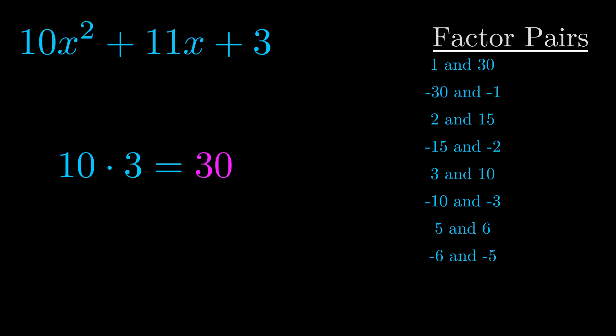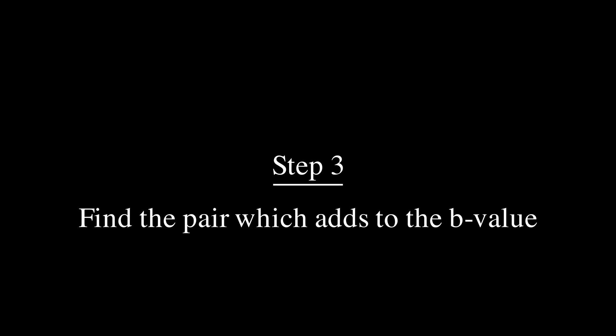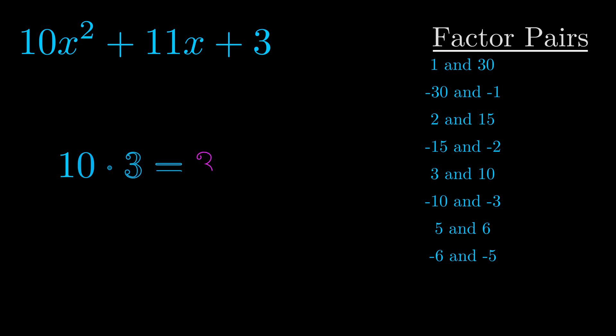Now once you have these factor pairs the goal is to find which of these pairs adds to the b value. The b value is the coefficient on the x term. That's the middle term, the one that we haven't done anything with yet. And really this is the only factor pair that we need.